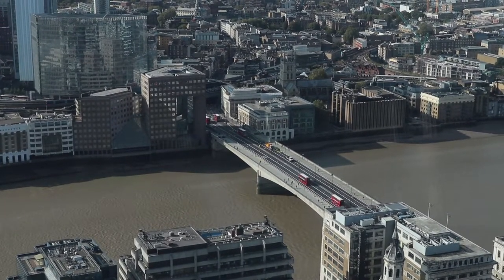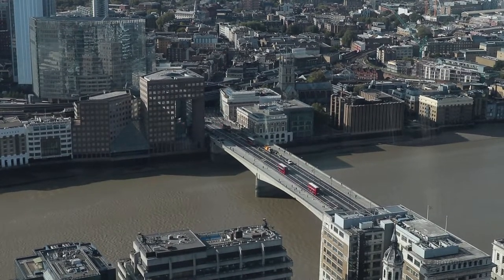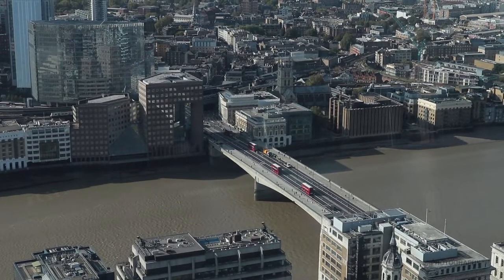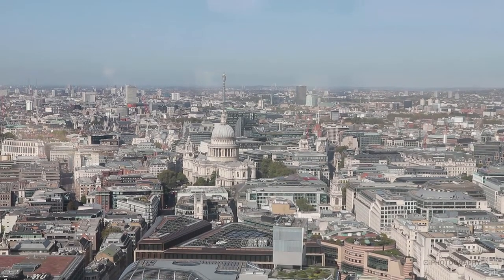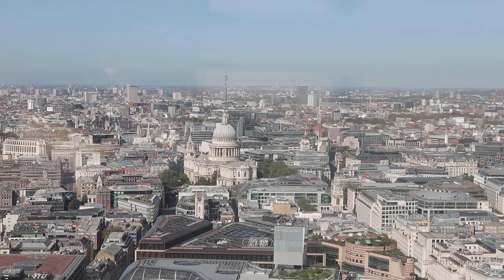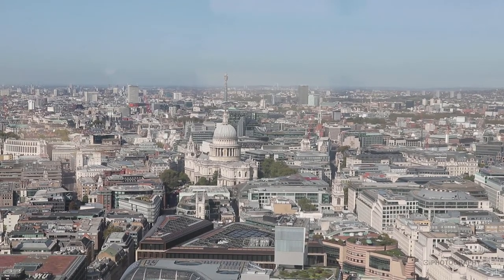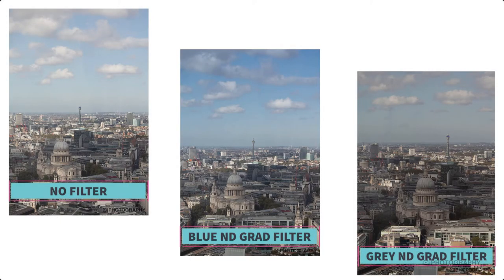For creative shots, it's also good to look at using graduated filters, especially if you're up really high and half of your image is the cityscape with a lot of sky. Using a graduated filter will reduce the amount of exposure in the sky. You can also use a blue filter to add a little more saturation to the colours in the sky, as well as grey ones, which can add a little more definition to clouds as well.